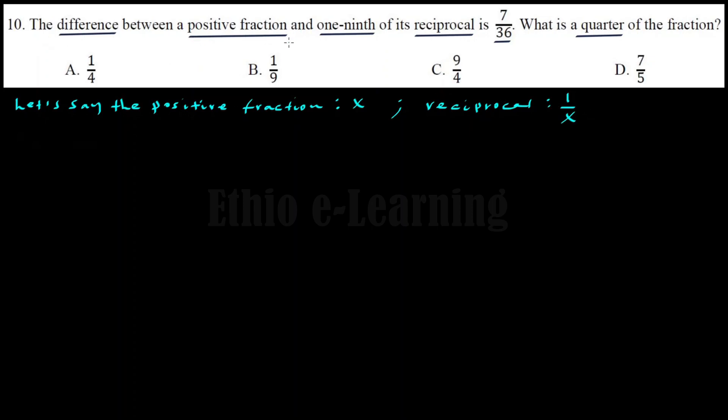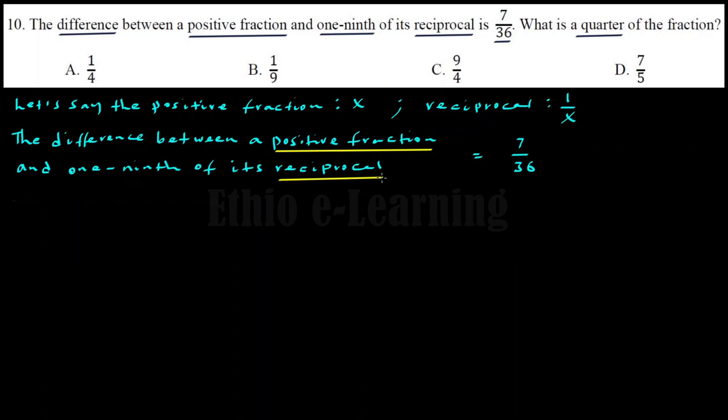Given the problem statement, it says the difference between a positive fraction and one-ninth of its reciprocal equals 7 over 36. So the difference between x and one-ninth of one over x